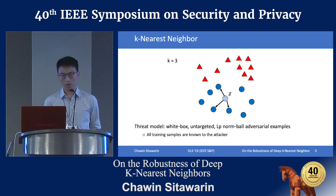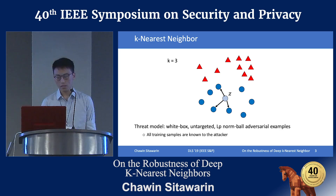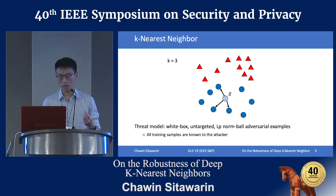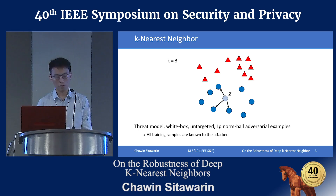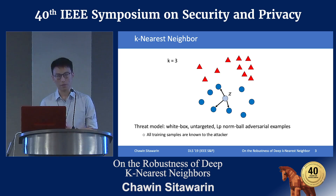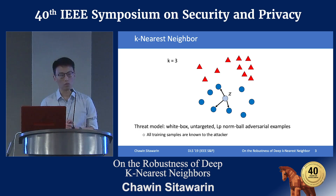I'm going to talk briefly about what K-Nearest Neighbor is. K-Nearest Neighbor is a non-parametric classifier. It is really simple. Given input Z, and for K equal to 3, we basically just search for three nearest neighbors to the input, and each of the samples votes for its own class. We are practically interested in the threat model with white box and untargeted attacks with an LP norm constraint on the adversarial perturbation. Since K-Nearest Neighbor is non-parametric, there are no weights, so what we mean by white box is that all the training samples are known to the attackers.